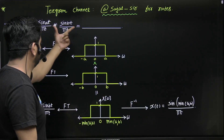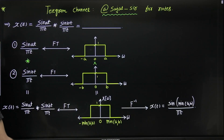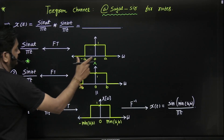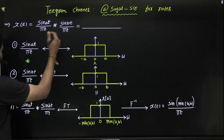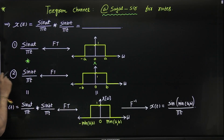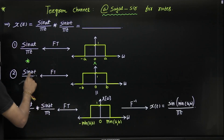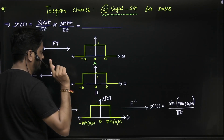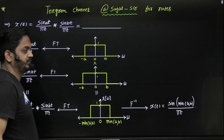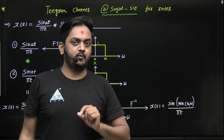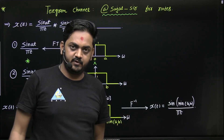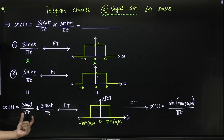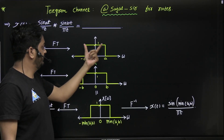This is a very important concept. We know that the Fourier transform of sin(at)/πt is a rectangle function from minus a to a with amplitude 1. Similarly, for sin(bt)/πt, the Fourier transform is a rectangle function from minus b to b with amplitude 1. Now, convolution in the time domain corresponds to multiplication in the frequency domain, so the convolution of these two signals gives x(t).